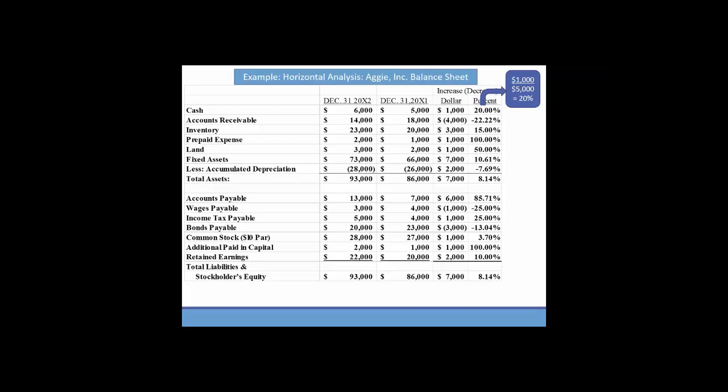So we know that cash increased by 20% from 20x1 to 20x2. Now the other way we could look at this is to take the amount for 20x2 of $6,000 and divide by the base year amount. You'll get 120%. They really give you the same answer. One tells you cash increased 20%, the other calculation tells you that cash is 120% of what it was in 20x1. So they both indicate a 20% increase.